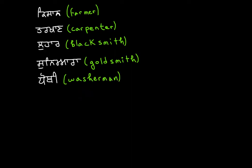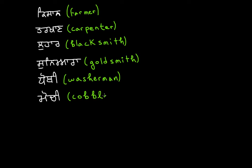Then we want to talk about a cobbler. A cobbler is a Mochi. It's a Mama and a Hora, we have a Chacha and we have a Bihari — Mochi. This would be a cobbler.